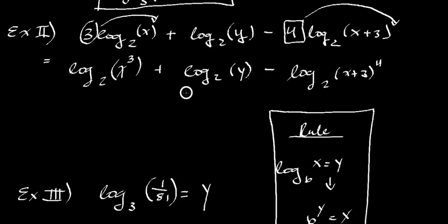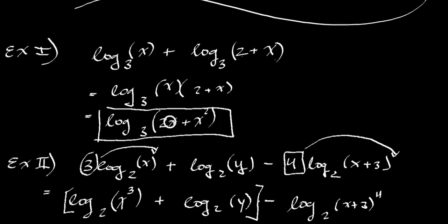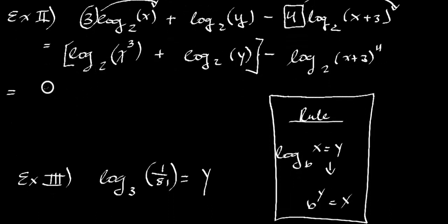Now what can we do? Well, these logs have the same base of 2. But there's something different here. We have an addition of these two logs, and then we are subtracting a log. So what I would do is take care of the addition first, and then go to this. So I'm just going to make some square brackets there, and recall adding two logs with the same base of 2.